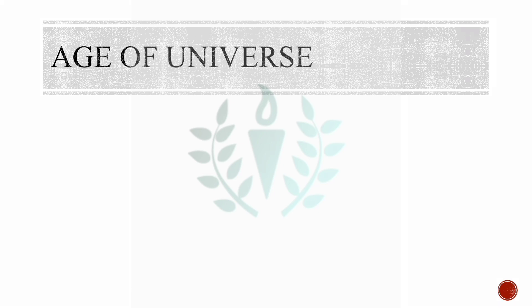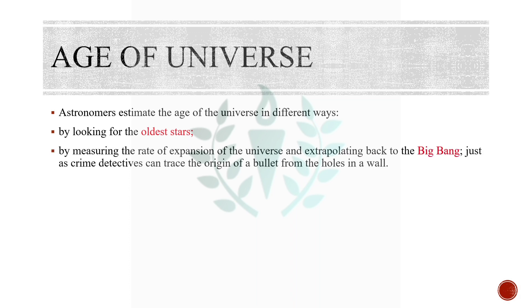Now after knowing what actually the universe is, let us talk about the age of the universe and how its age is being calculated. Astronomers estimate the age of the universe in different ways. The first method involves observing the oldest stars of the universe and calculating the age by measuring different parameters of these stars.